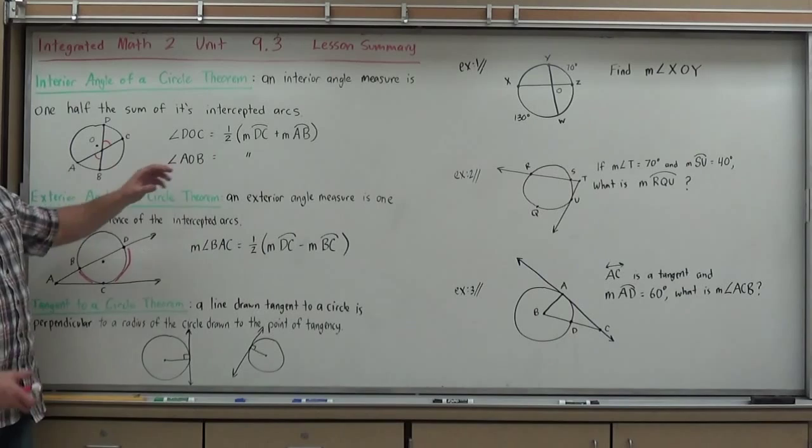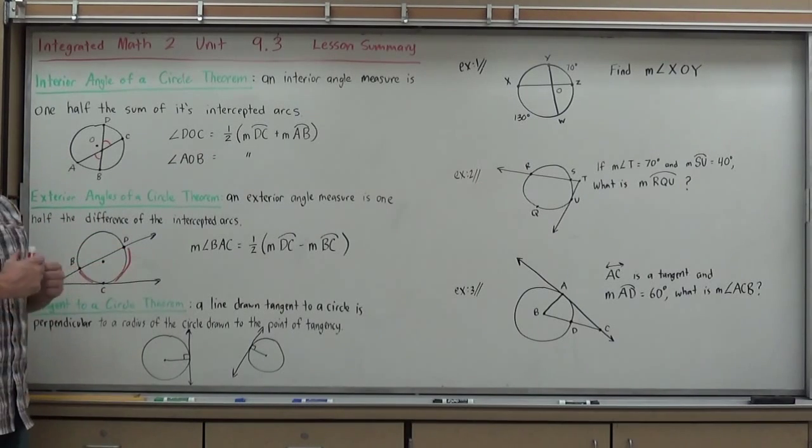Arc DC minus arc BC divided by two. So, similar formulas. For the interior, you're adding them. For the exterior, you're subtracting them.